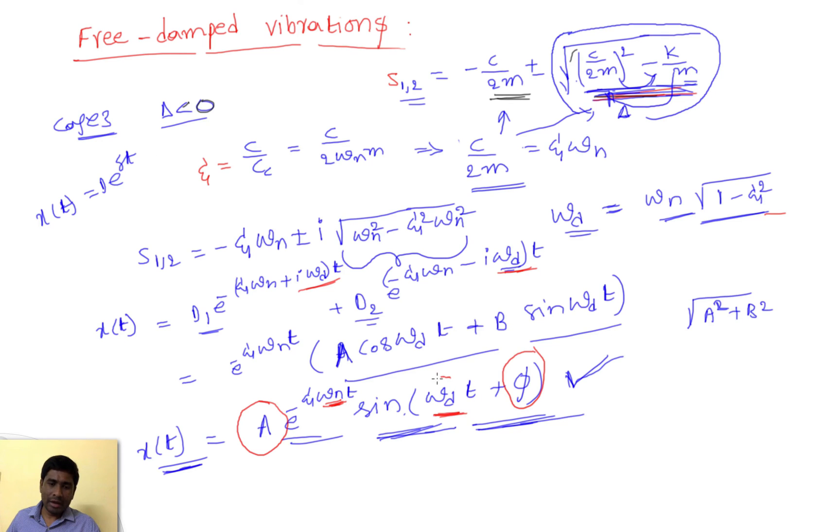But here, the omega d term is before the time variable. So unlike in the previous case, here it's omega d, but in the previous free vibration case, this was omega n. What is omega d? Again, we need to use this formula.